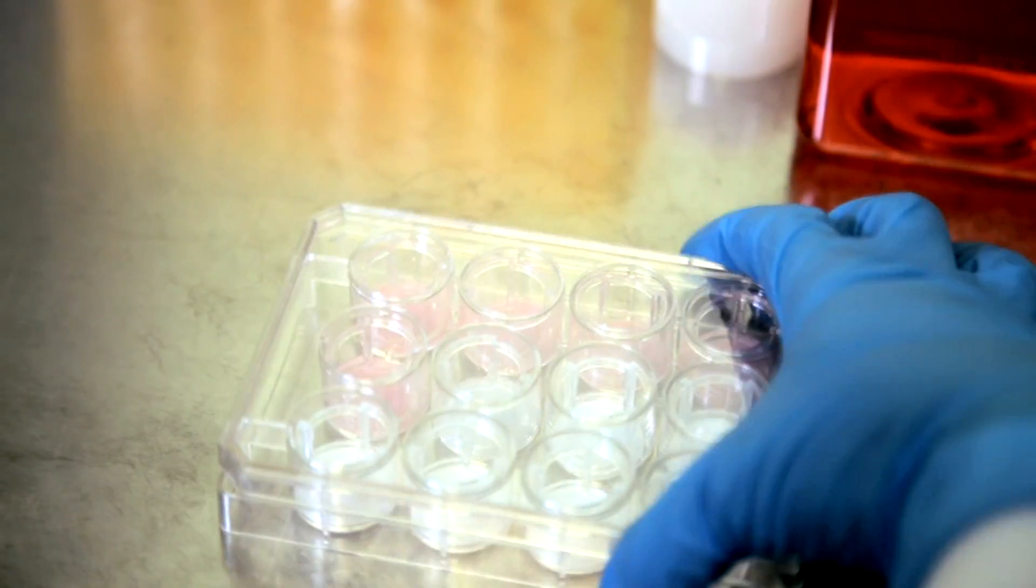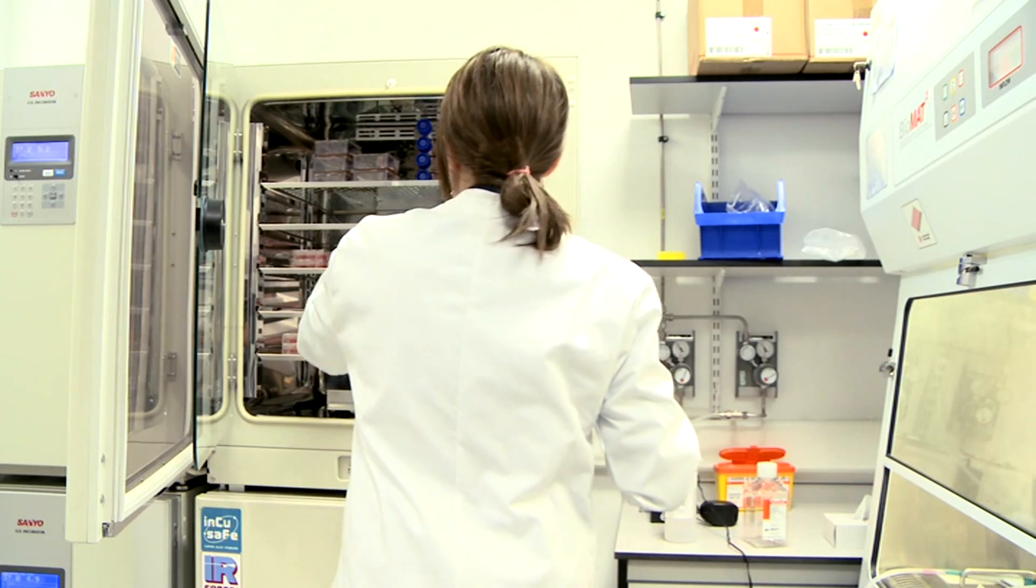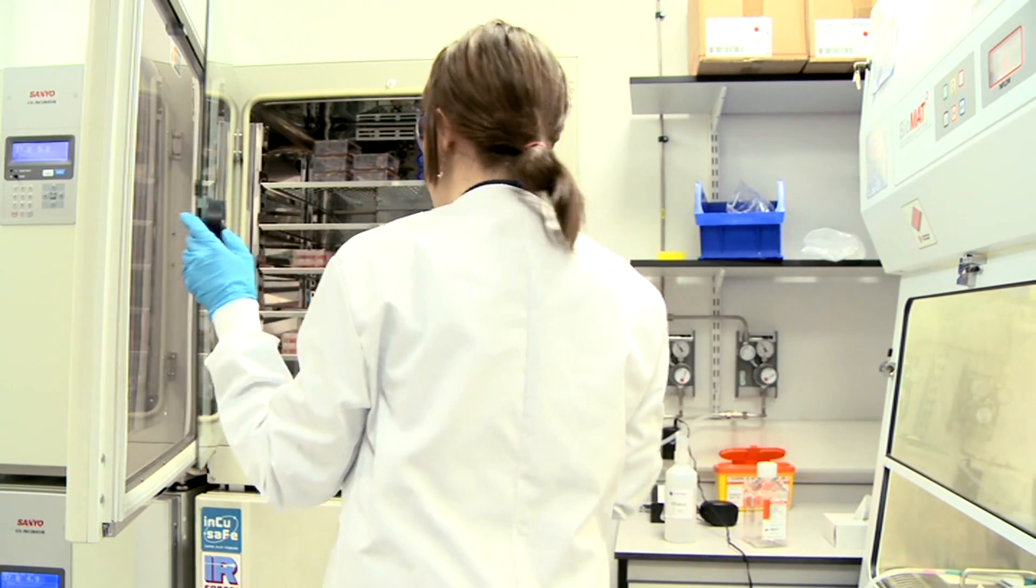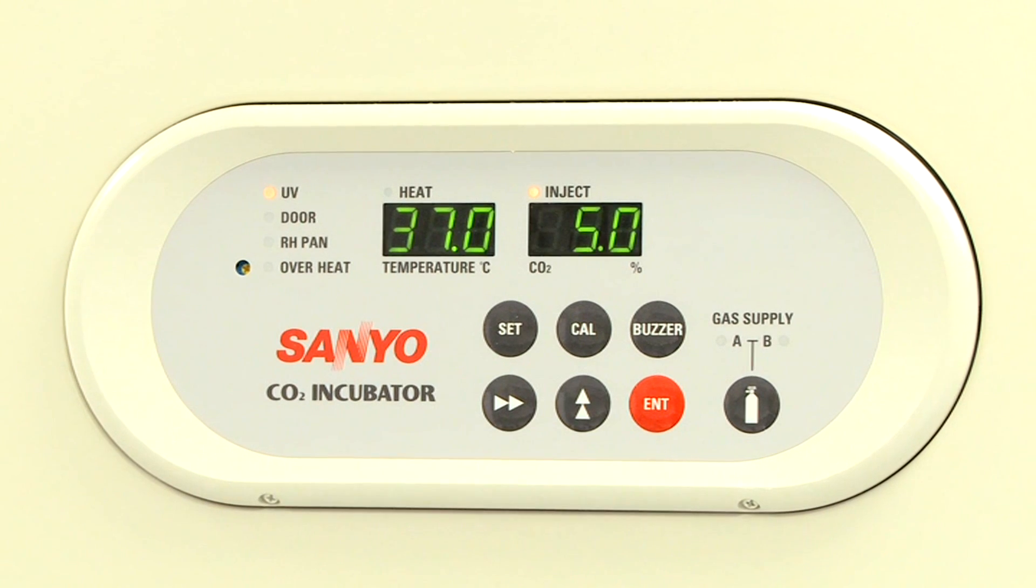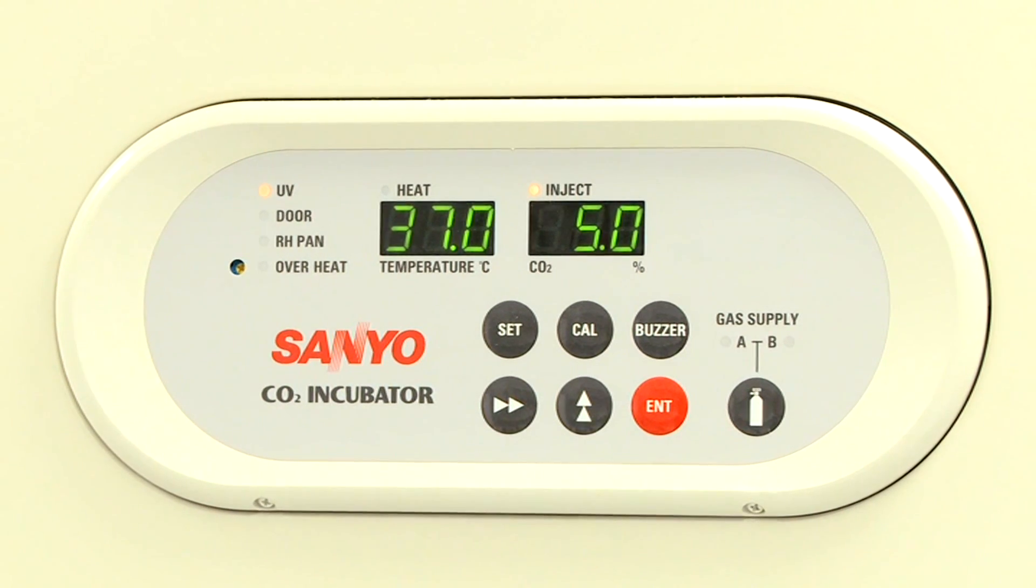Replace the lid and place the plate in a humidified incubator at 37 degrees centigrade with 5% carbon dioxide for approximately three hours. This will facilitate cell attachment to the Alvatex membrane.